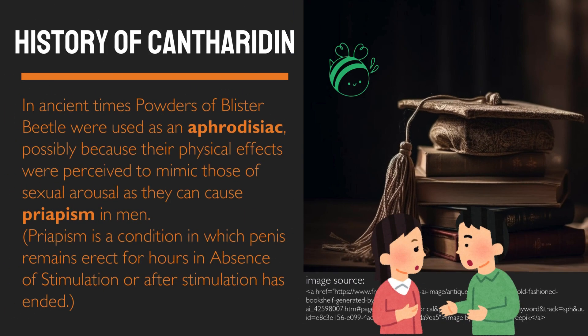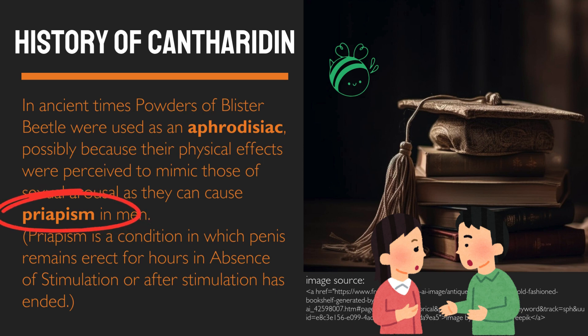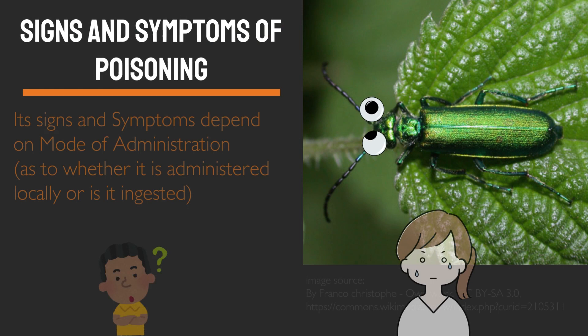History of cantharidin: in ancient times, powders of blister beetle were used as an aphrodisiac, possibly because their physical effects were perceived to mimic those of sexual arousal, as they can cause priapism in men. Priapism is a condition in which the penis remains erect for hours in the absence of stimulation, or after stimulation has ended.